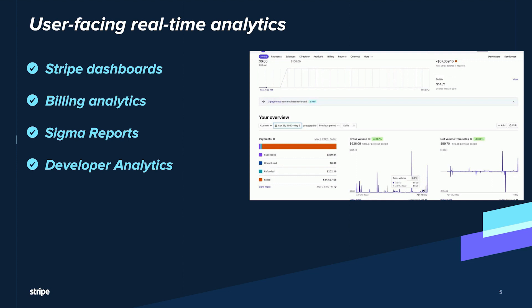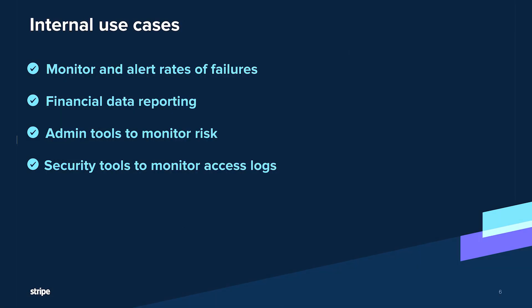Our billing products, which show billing analytics, are powered by Pinot. Since Stripe is developer-first, all your stats about API requests and API errors are also powered by Pinot. Aside from external user-facing dashboards, we support a number of internal use cases. Our product teams use Pinot for monitoring and alerting on failures in payment processors. Our financial data reporting team uses it to deep dive into Stripe's transaction data. We also have admin tools for risk analytics and security tools to monitor access logs and ensure there are no security breaches.